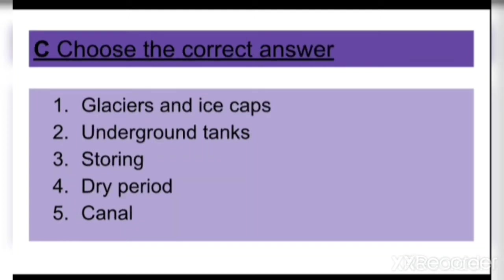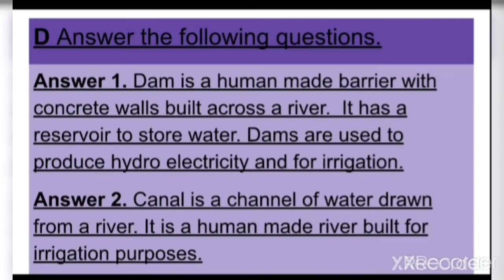Question C: Choose the correct answer. First: glaciers and ice caps. Second: underground tanks. Third: storing. Fourth: dry period. Fifth: canal. Question D: Answer the following questions. Answer number one: A dam is a human-made barrier with concrete walls built across a river.